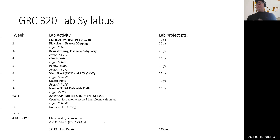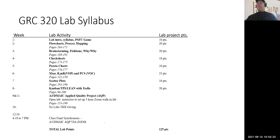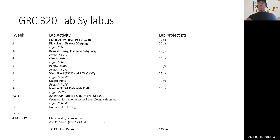Weeks nine and eleven, sandwiched around the Thanksgiving holiday, are open lab weeks where you can talk to me about your Applied Quality Project, go over your data, and meet with your groups. Week ten is Thanksgiving — no labs that whole week. The final is on December 10th, 4 to 7 PM on a Friday, and that is your AQP final presentation. Total points for the lab is 125 points.